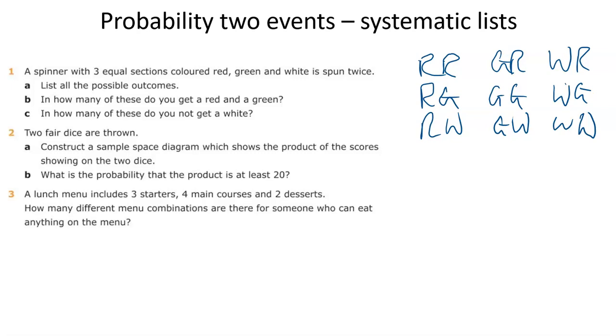And I could have drawn this instead of as a list, I could have done it as a sample space diagram with the first spin over here as red, green, white, and the second up here. Oh, I've done that the wrong way around, haven't I? This is the second, and this is the first.